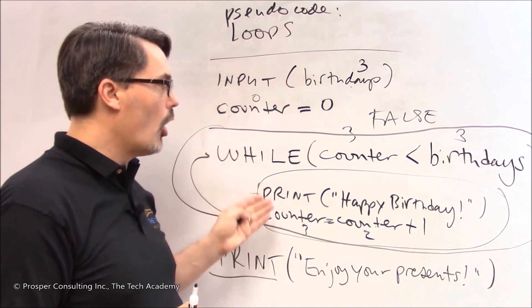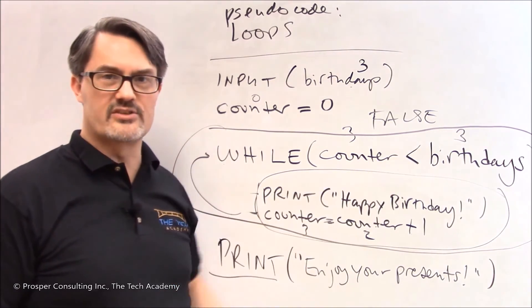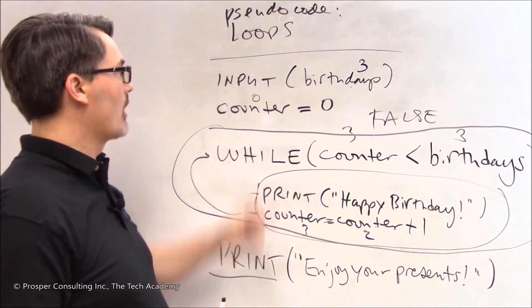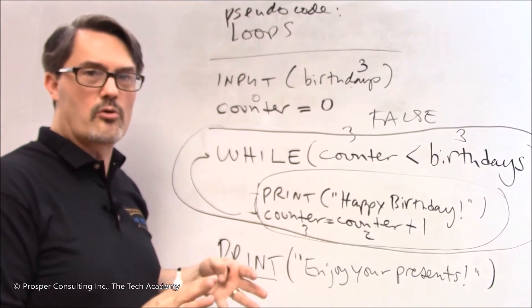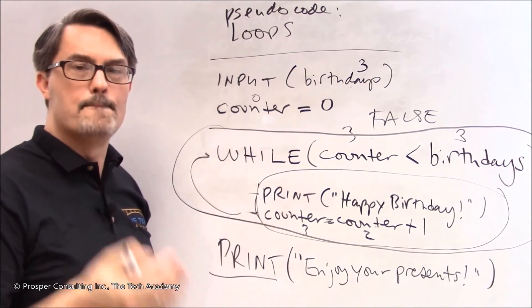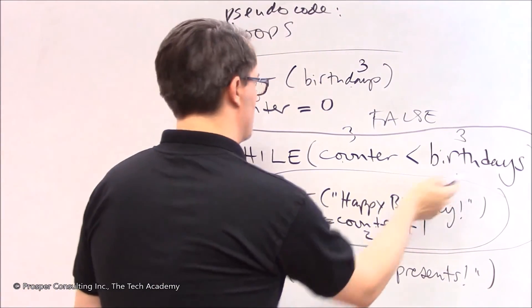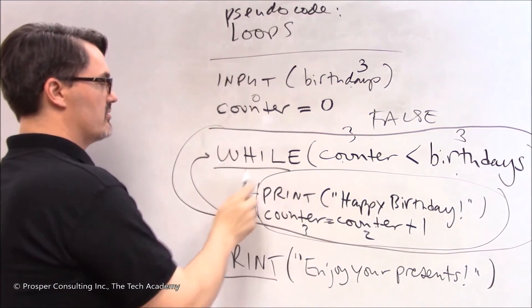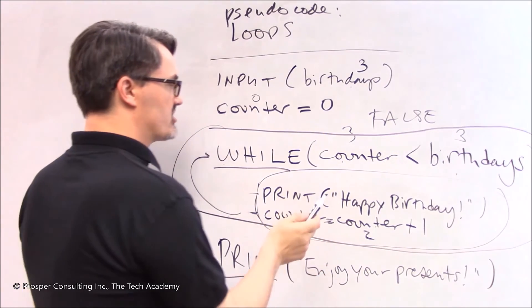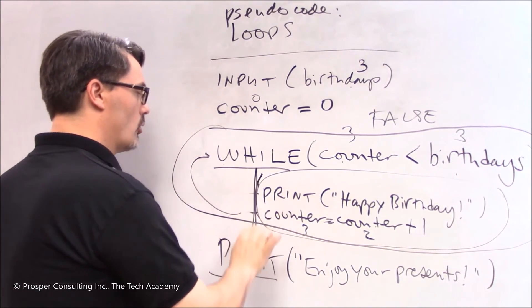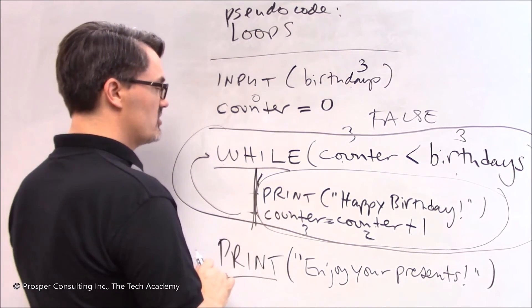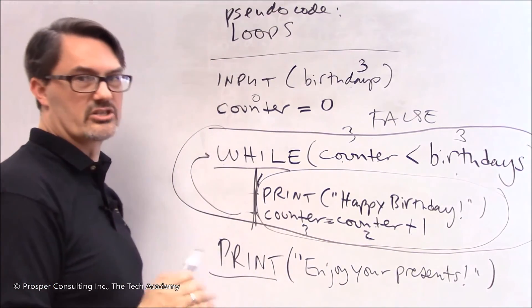Looping statements always have a condition to be checked because if you remember from a couple minutes ago I described a loop as a section of the computer program that can be repeated based on conditions. So we have a conditional statement and we have a loop statement. The loop checks the condition and executes the code, the computer instructions in its loop, based on that condition.